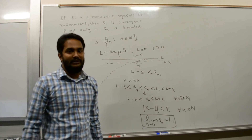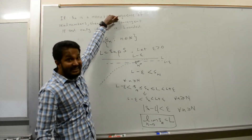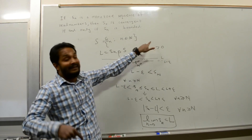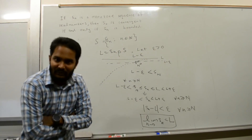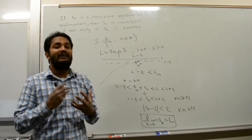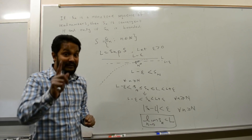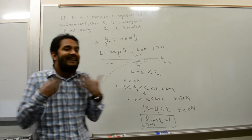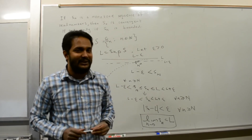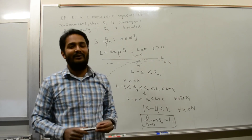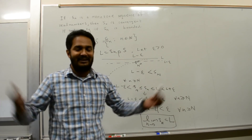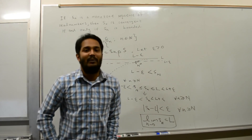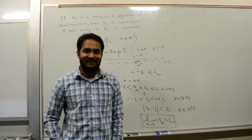So we proved: for a monotonically increasing bounded sequence, the supremum is the limit, hence it's convergent. For a monotonically decreasing sequence, the argument is analogous — the infimum of the sequence is the limit. I'll leave that as an exercise. That completes the proof of the Monotone Convergence Theorem. Thank you for watching.